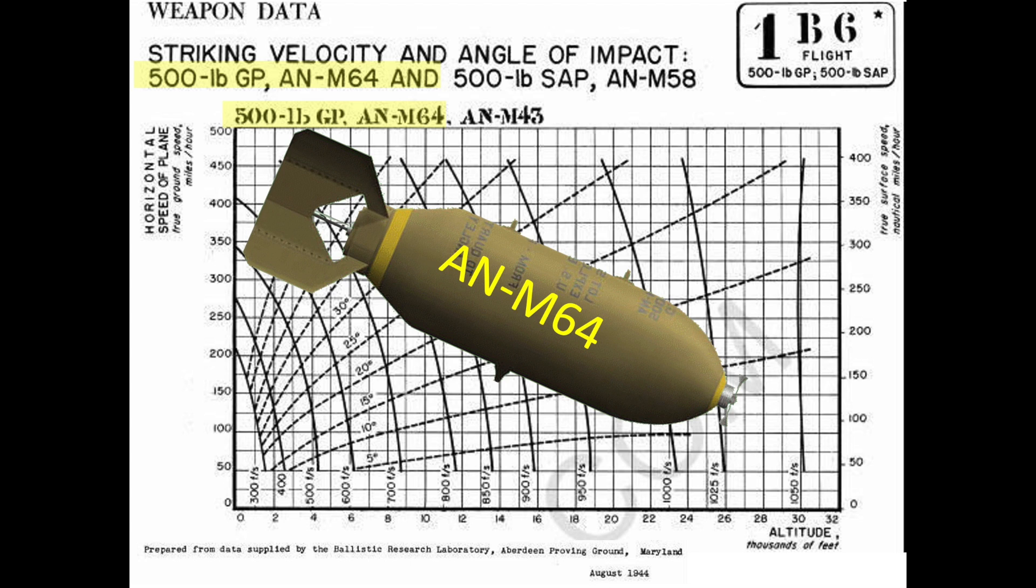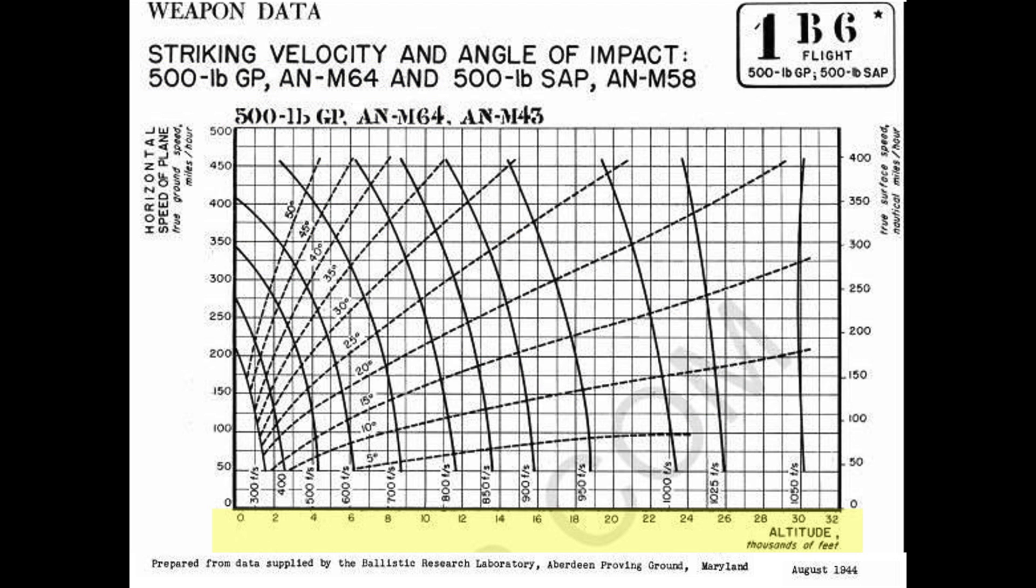This chart represents an AN-M64 500-pound general purpose bomb's dynamics at impact. The x-axis represents the bomb release altitude scaled from zero to 32,000 feet.